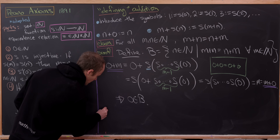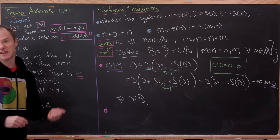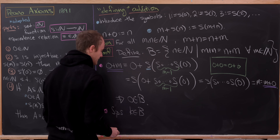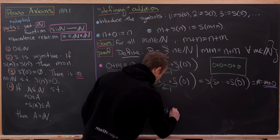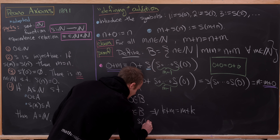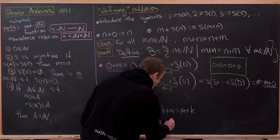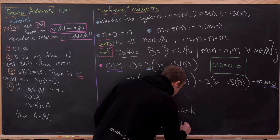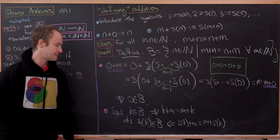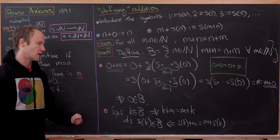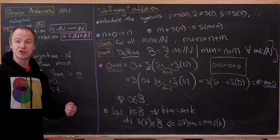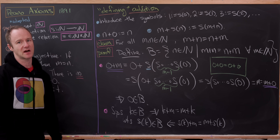For the inductive step, suppose K is in B, so K plus M equals M plus K. We want to show S(K) is in B, which follows if we can show S(K) plus M equals M plus S(K). This will likely require an induction inside this argument as well — I'll leave it to you to fill in the details. There are a few more videos related to this topic coming up on the channel.